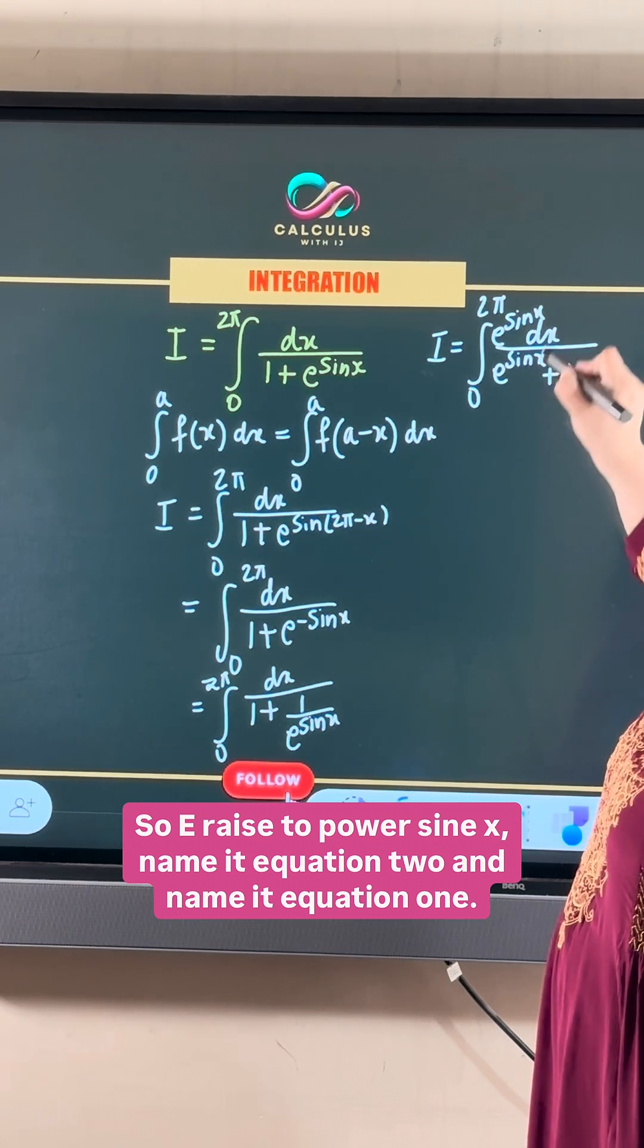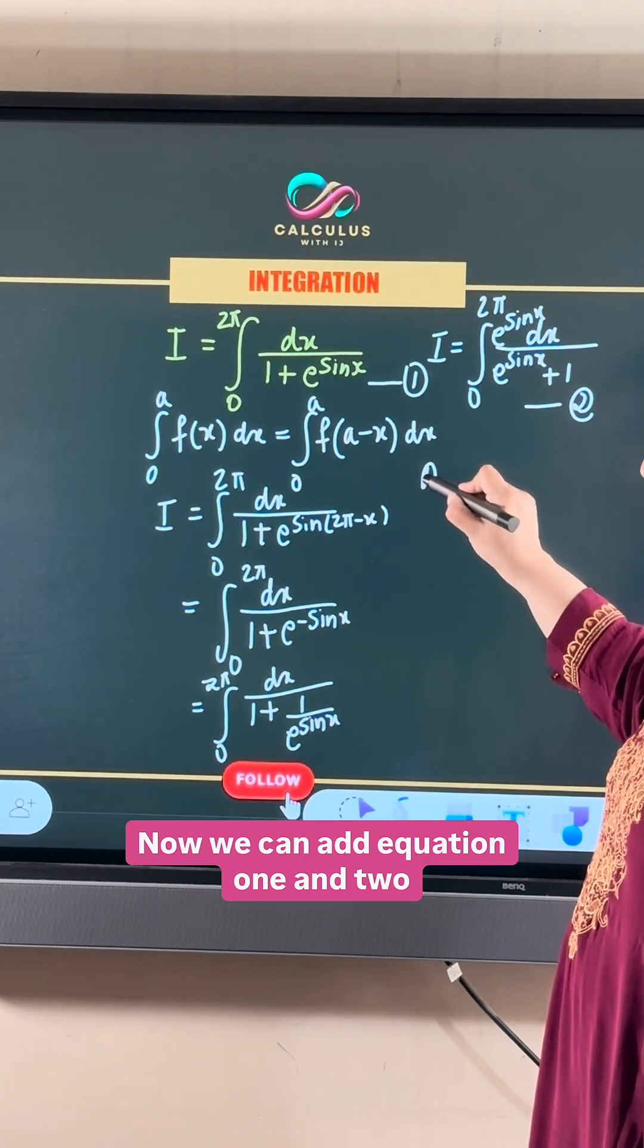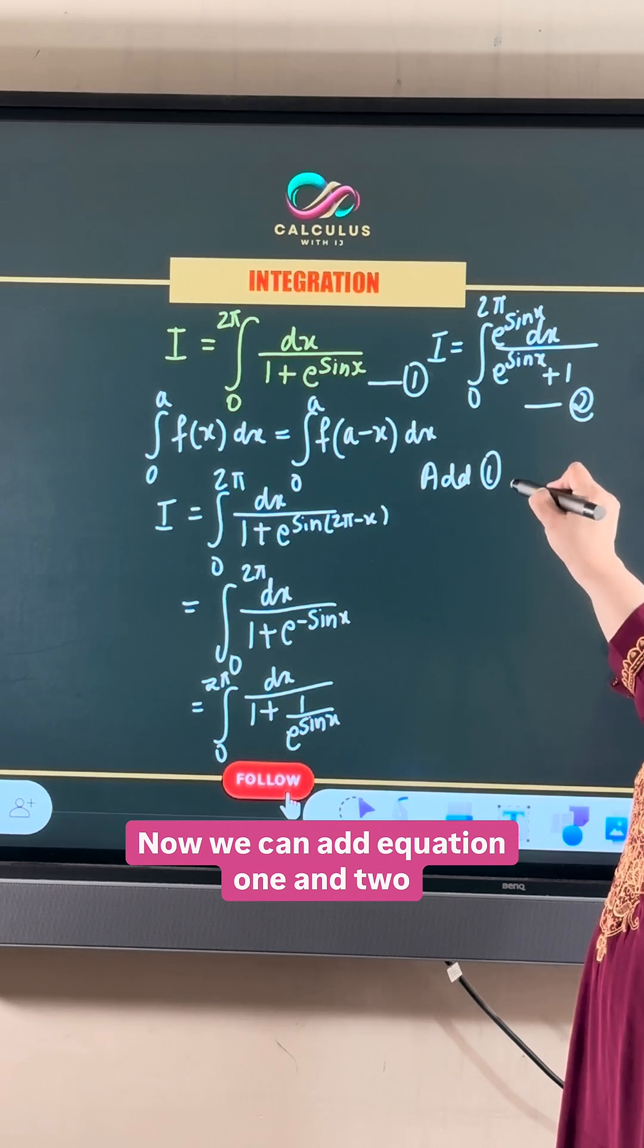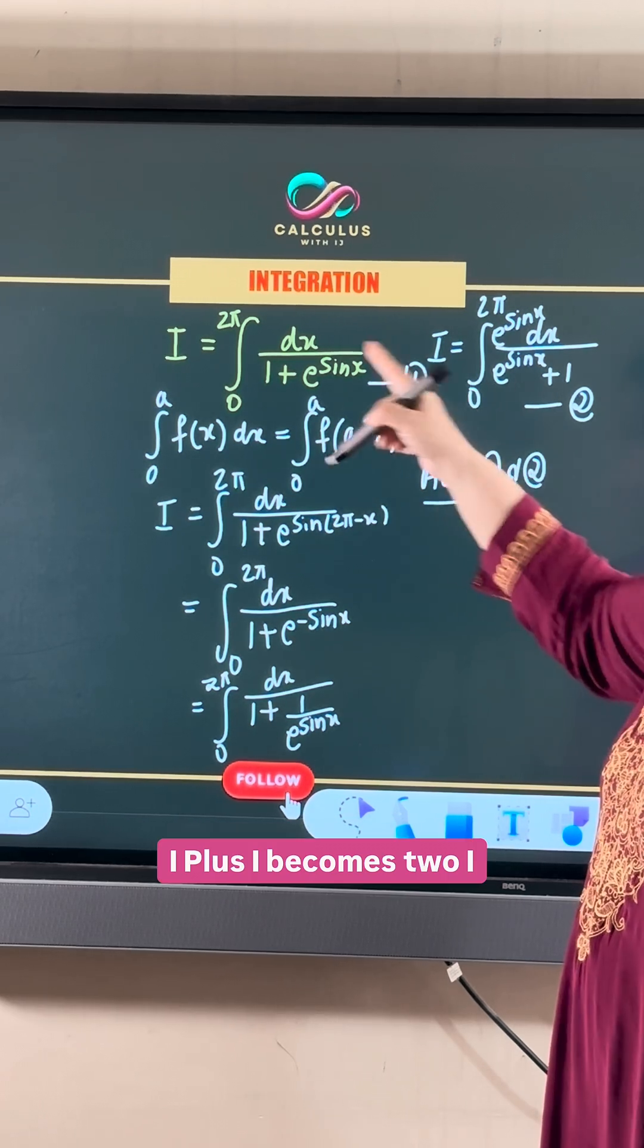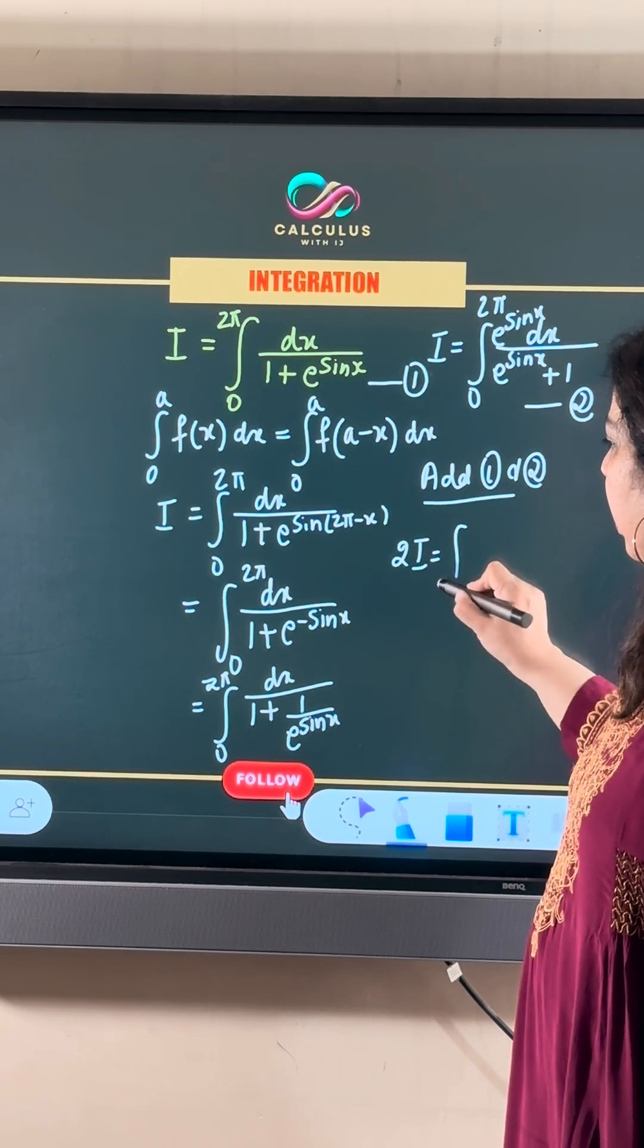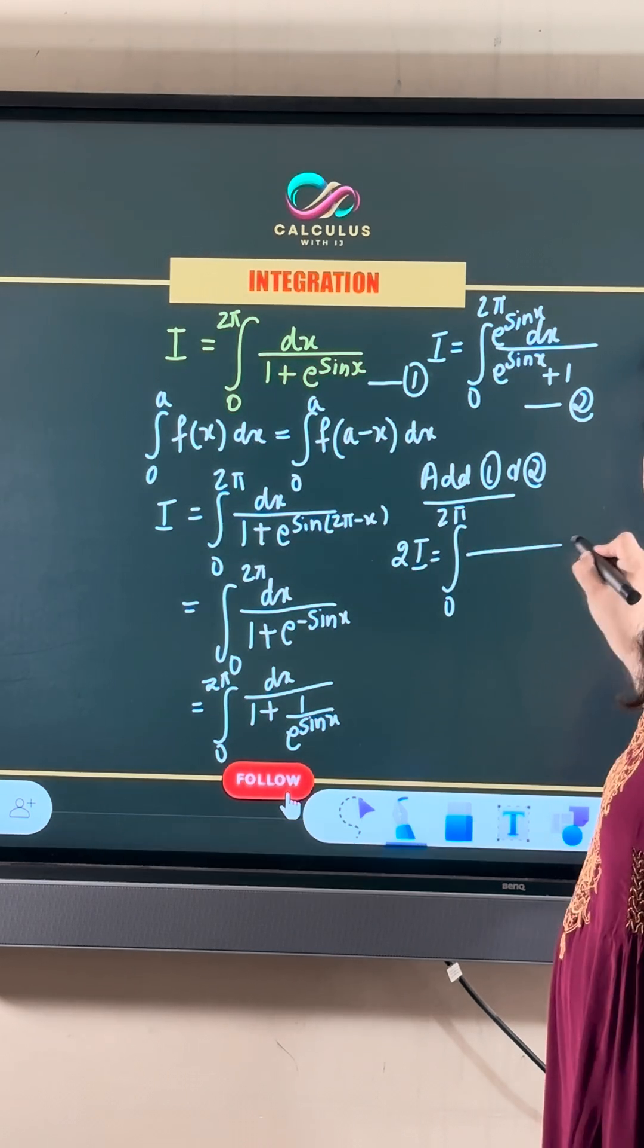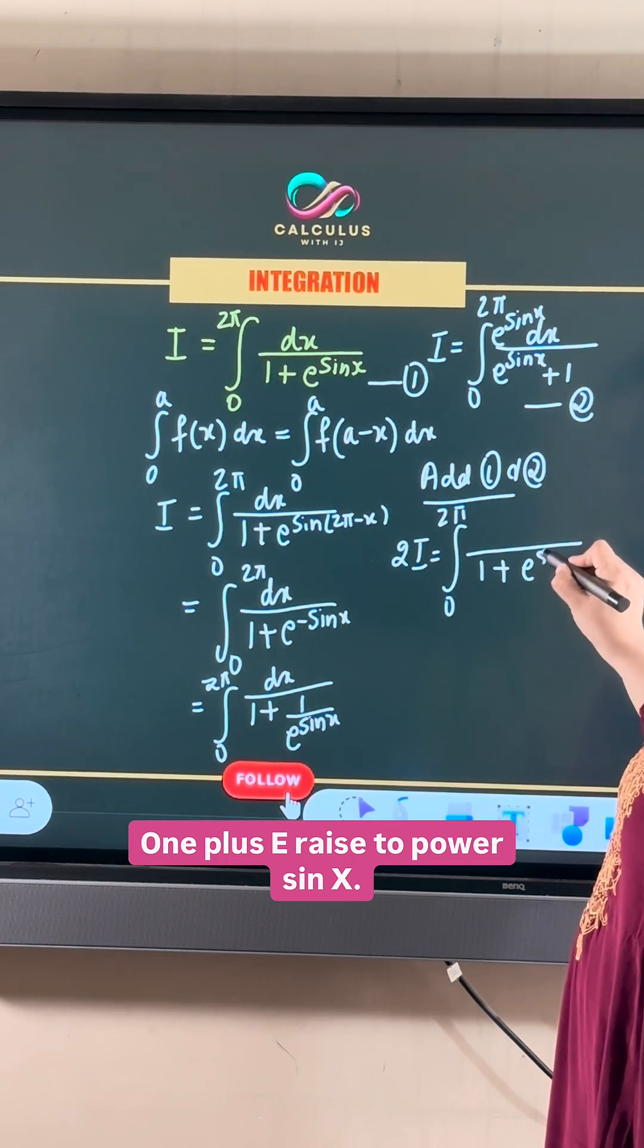So e raised to power sin x goes in the numerator. Name this equation 2 and the original equation 1. Now we can add equations 1 and 2. I plus I becomes 2I. The integral is from 0 to 2π. The denominator is the same in both cases: 1 plus e raised to power sin x.